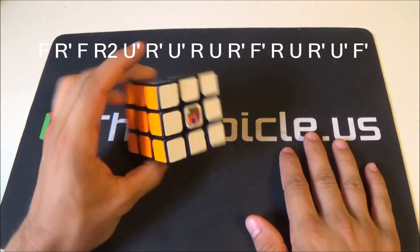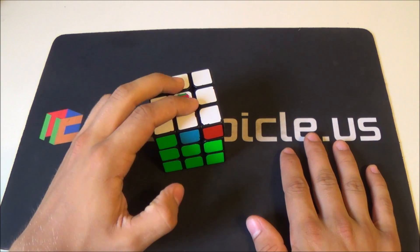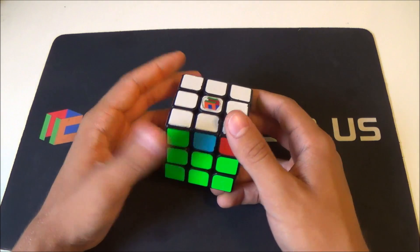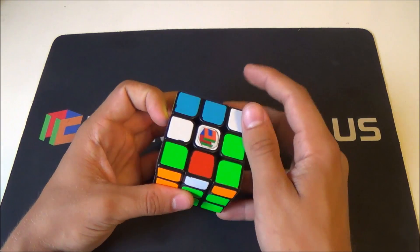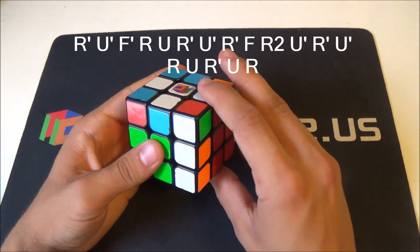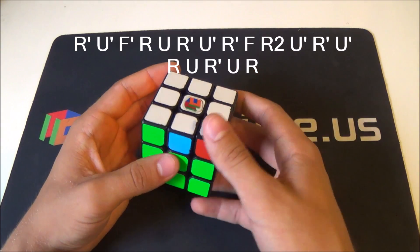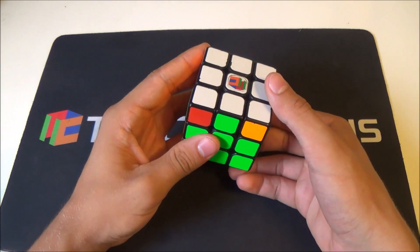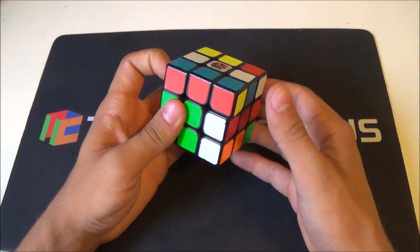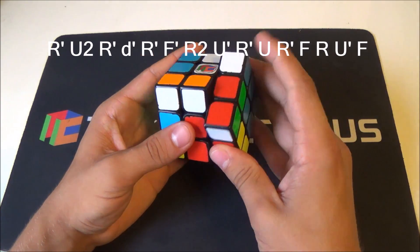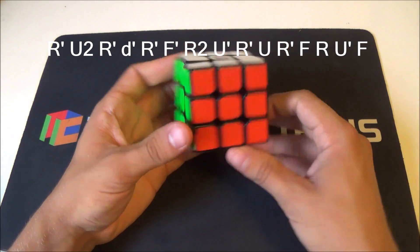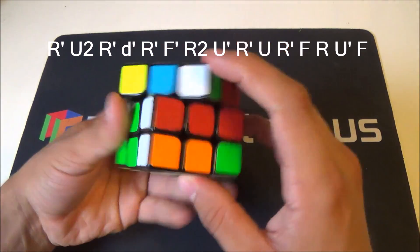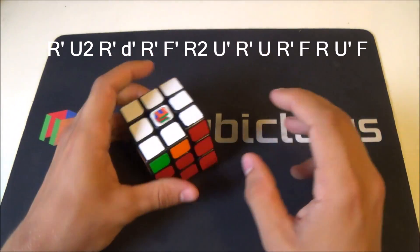Now we've got the dreaded F perm. This one almost everybody uses the same alg, but there are actually some other alternates that are pretty okay. So I included them. The normal alg that everyone uses is a setup to a T perm. From this angle there's another alg that's kind of similar to the V perm that we'll look at here in a second. Just like that. I'm not too great at that one.